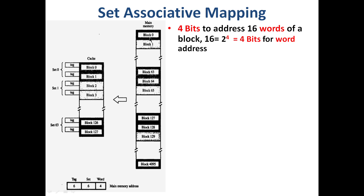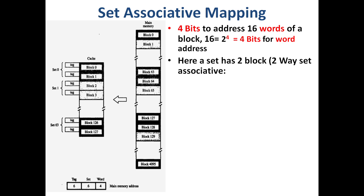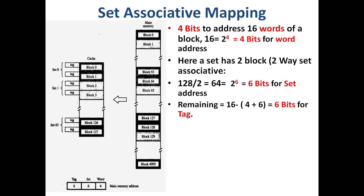In set associative mapping, one block is 16 words (2 raised to 4), so the word address is 4 bits. In two-way set associative mapping, there are 2 blocks per set. With 128 cache blocks divided by 2, we get 64 sets. 64 is 2 raised to 6, so the set address field is 6 bits. The remaining bits are 16 minus 4 minus 6 = 6 bits for the tag.